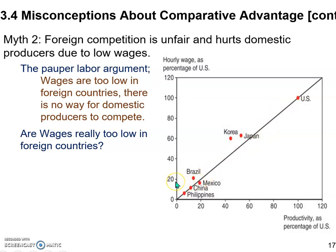In other words, their wages are very low — that is true — however, their labor productivity is proportionally low as well. Some economies like Brazil, Korea, and Japan actually sit above the 45-degree line, meaning for their given labor productivity, they actually receive higher pay compared to American workers. So from this evidence, we find that wages in these economies are proportional to their labor productivity. At least this evidence does not show that their wages are too low compared to the U.S.